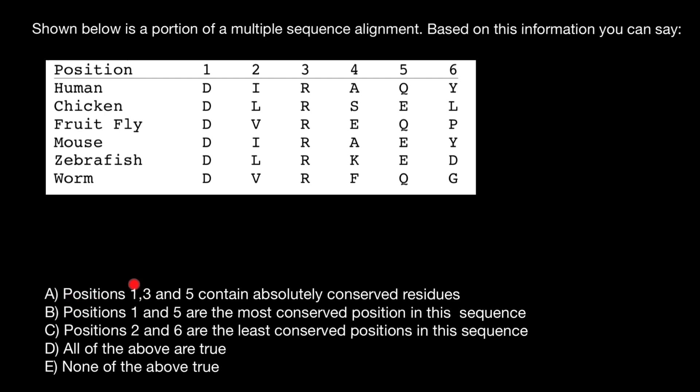The first question: positions 1, 3, and 5 contain absolutely conserved residues. Let's compare position one, represented in all species by the same amino acid D, aspartic acid. We can say this is 100% conserved position. We have only one amino acid here.